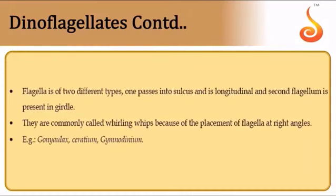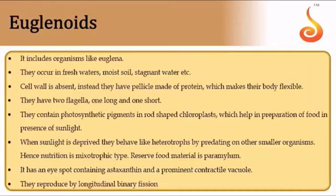Dinoflagellates have a heavily armored cell wall with tightly fitted cellulose plates. They have two grooves: a horizontal circular groove called the girdle and a vertical groove called the sulcus, from which two flagella emerge at right angles. Some dinoflagellates undergo rapid multiplication causing red tides (e.g., Gonyaulax); some are poisonous to fish. Euglenoids such as Euglena have a proteinaceous covering called a pellicle (no cell wall), two flagella, and a photosensitive eye spot containing the pigment astaxanthin.